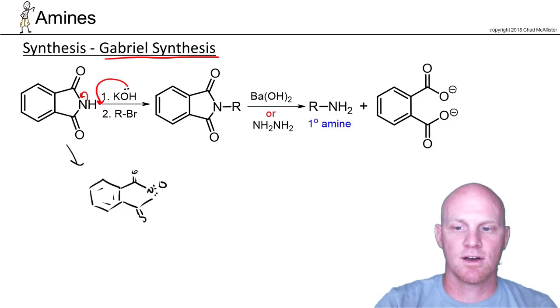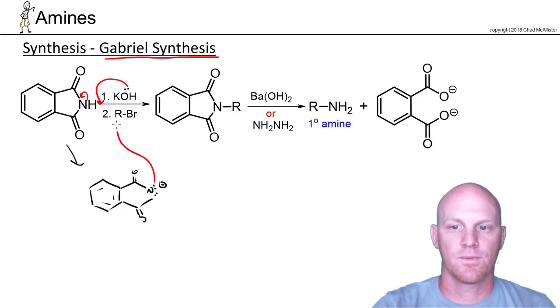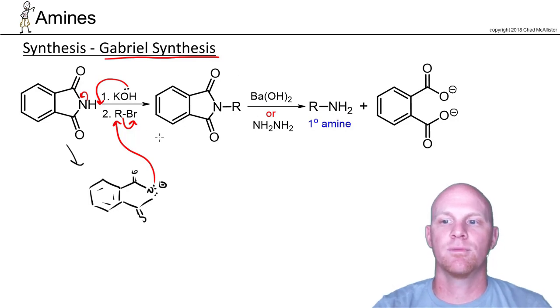And then this conjugate base can actually come and do SN2 on an appropriate alkyl halide. So we'll come and attack, kick off the leaving group, and we get this intermediate right here.